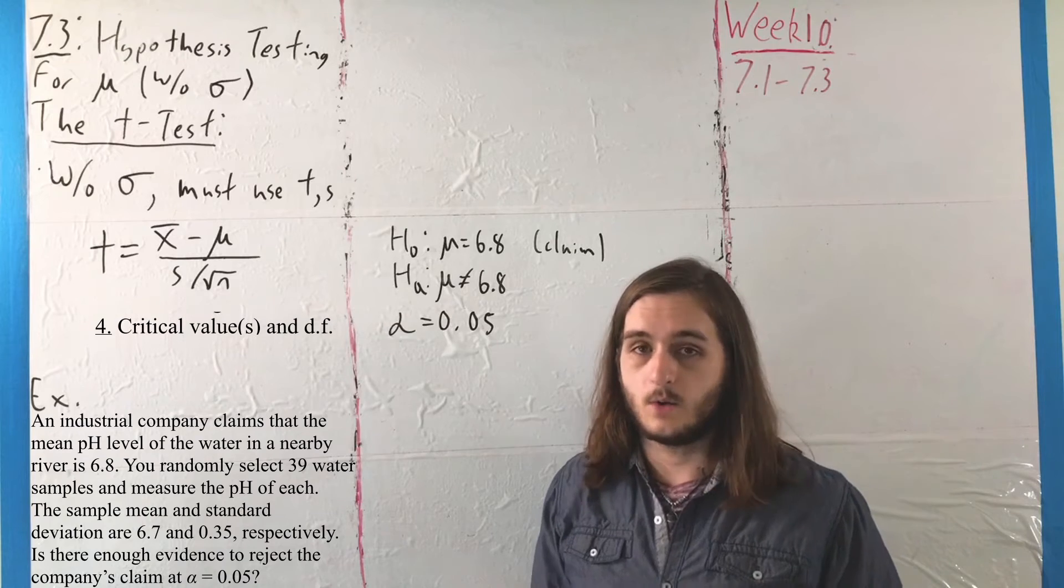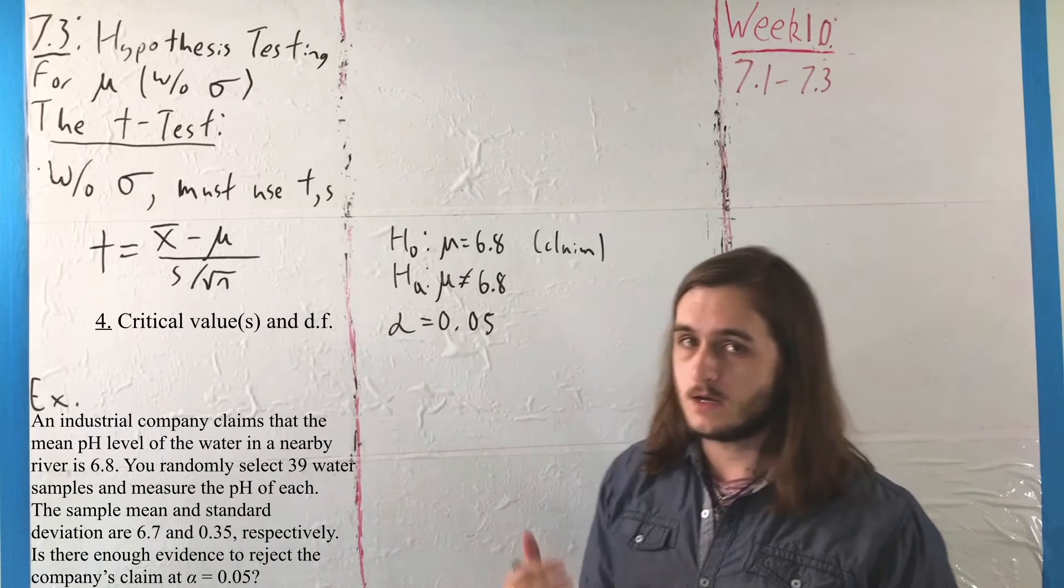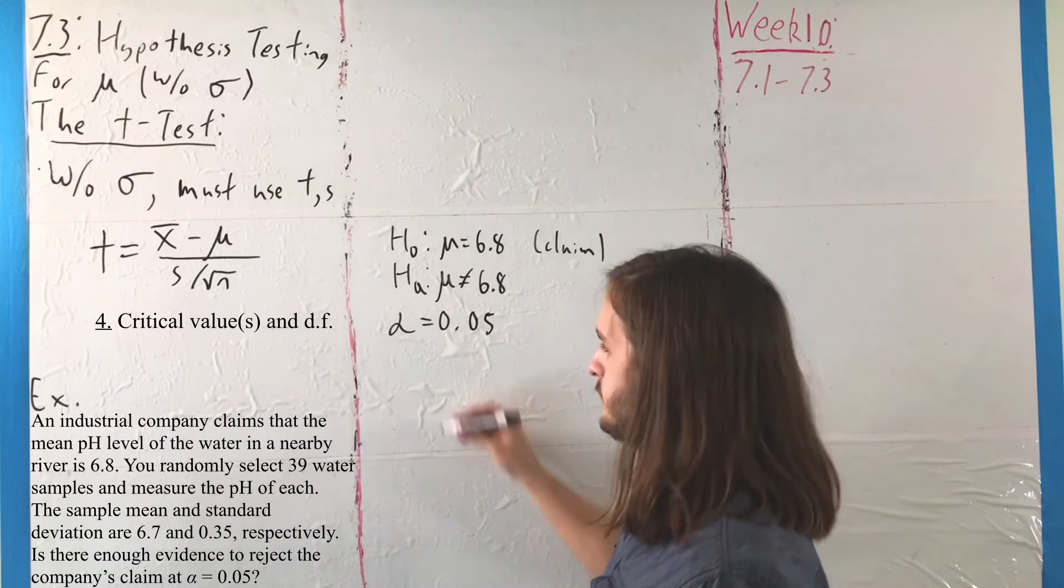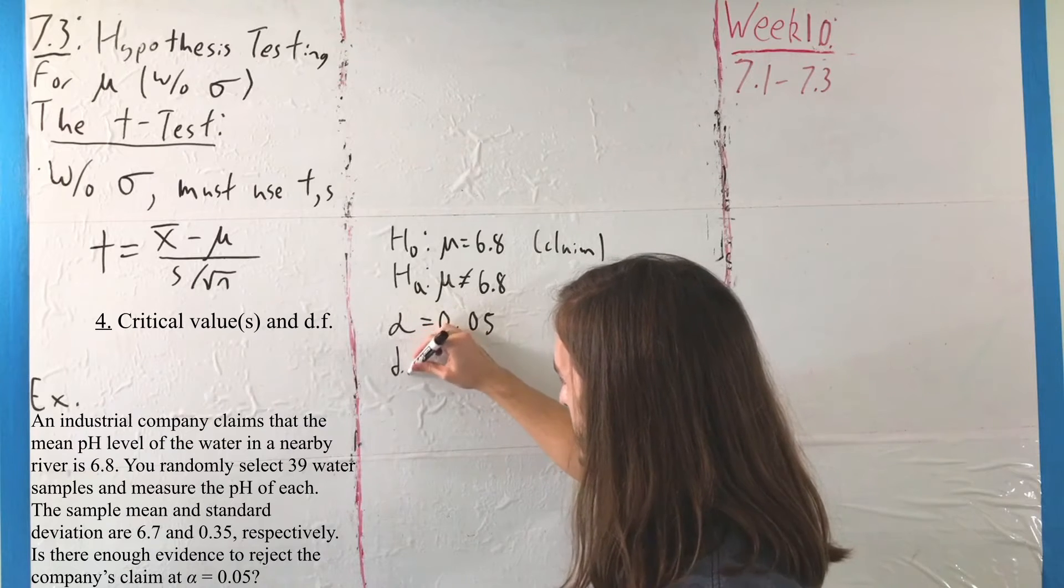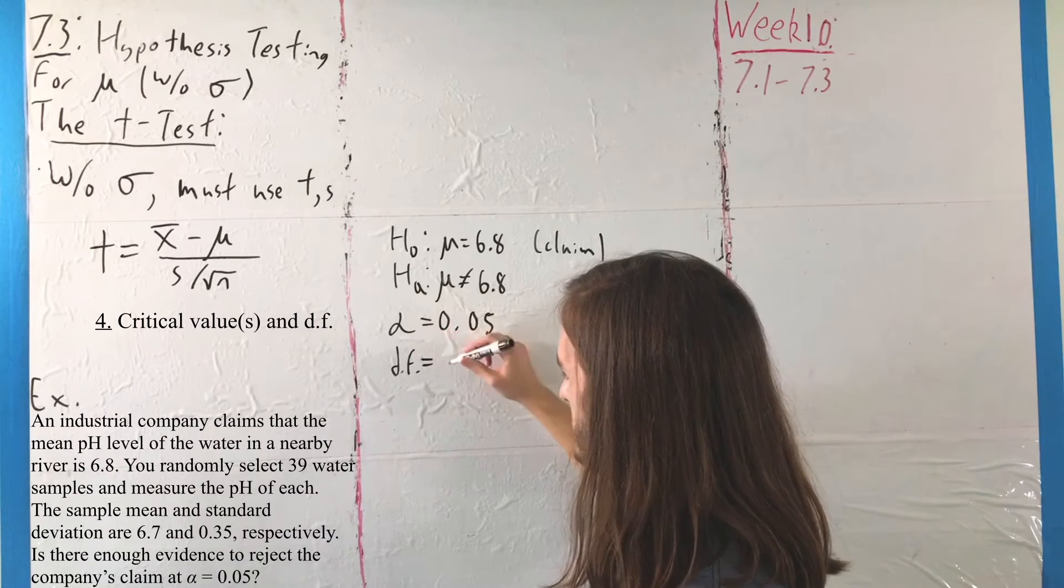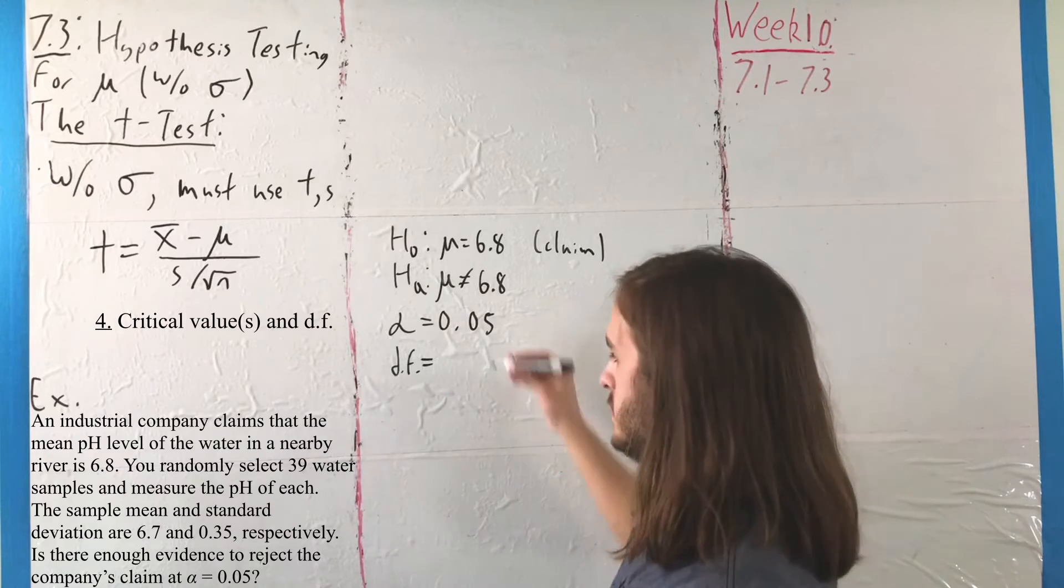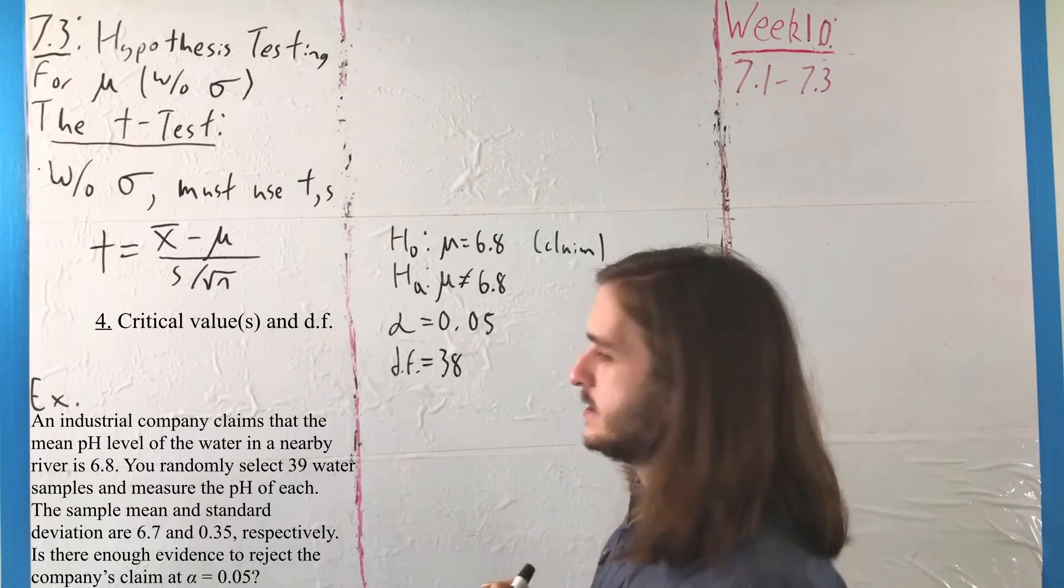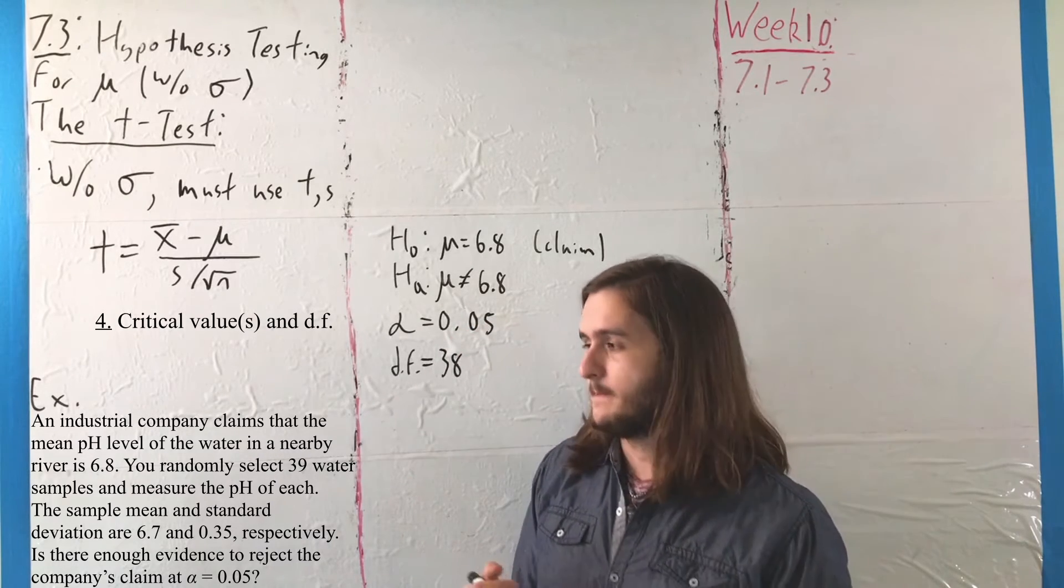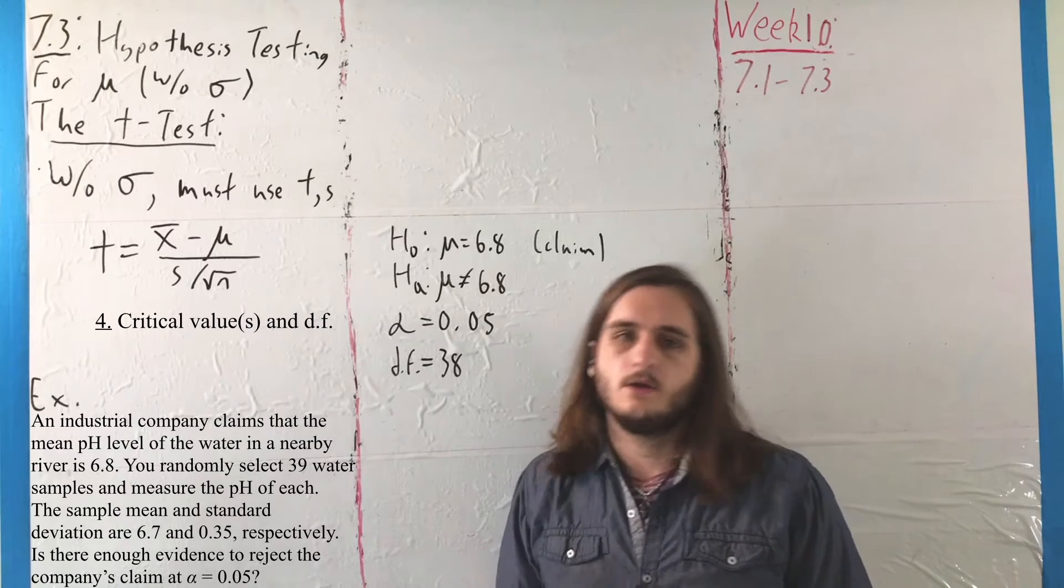Then, we can talk about our degrees of freedom and critical values. Our degrees of freedom, still nothing too special to get those. It's just 1 minus the sample size here. We have 39 things. So, we can be free, as it were, with 38 of them.